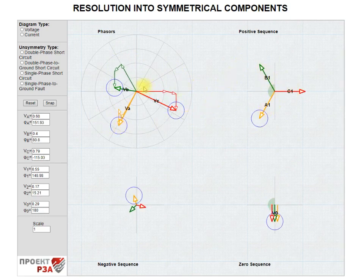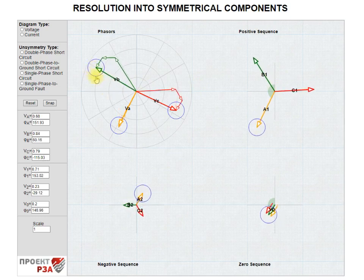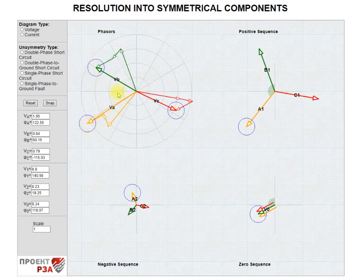For example, here we've got a system of three phases VA, VB, and VC. You can clearly see that it's unsymmetrical. According to the Fortescue theorem we can resolve this one into three symmetrical systems.